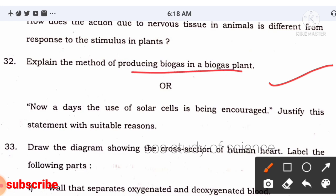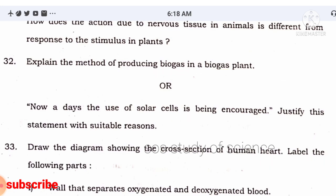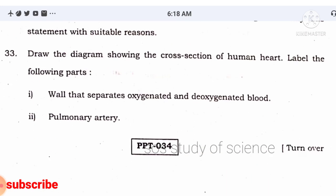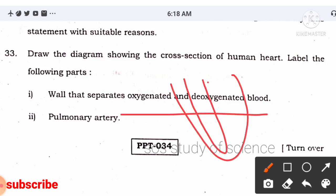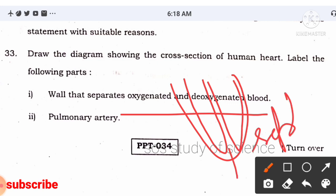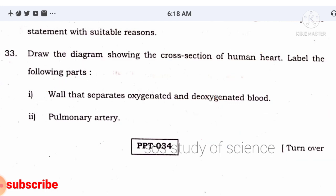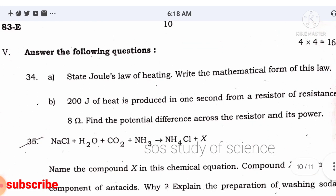Question 33: draw a diagram showing the cross-section of the human heart. Label the wall that separates oxygenated and deoxygenated blood — this wall is called the septum. Also label the pulmonary artery. You can easily score four marks on this question.